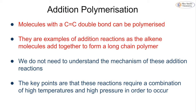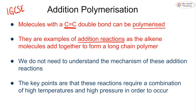Looking at addition polymerization - you learned this back in IGCSE so this should just be a nice bit of revision. We know that anything with a carbon-to-carbon double bond can undergo this polymerization reaction - the breaking down of the carbon-to-carbon double bond and joining up to form a large molecule. These are examples of addition reactions because we are breaking that pi bond and forming this large molecule.